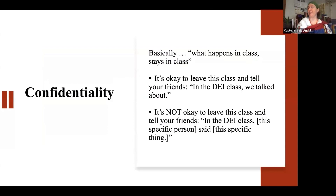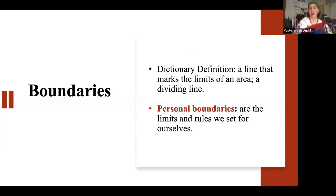Confidentiality: basically, what happens in class stays in class. It is completely okay to leave this class and talk to your friends and colleagues and say, 'in this class, we talked about this.' But respecting confidentiality means not leaving the class and saying, 'in this class, this specific person said this specific thing.' And then boundaries — the dictionary definition is simply a line, a limit. Personal boundaries are the lines and limits we set for ourselves.